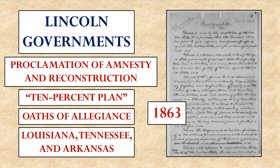With that in mind, he had a particular approach to restoring the country. In his Proclamation of Amnesty and Reconstruction, he wanted people in the South who had taken up arms against the United States to swear an oath of allegiance. If 10% of the voters in a state were willing to swear allegiance, they could hold elections and restore their government. Three states — Louisiana, Tennessee, and Arkansas — took advantage of this plan to reintegrate themselves into the United States.